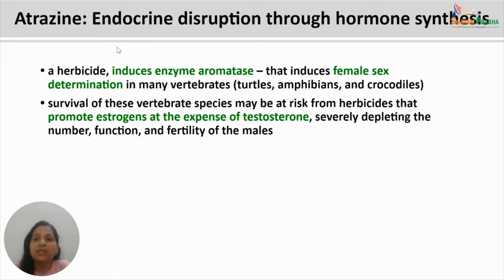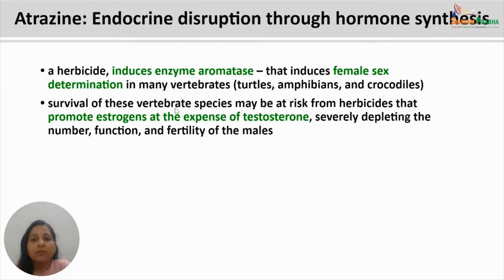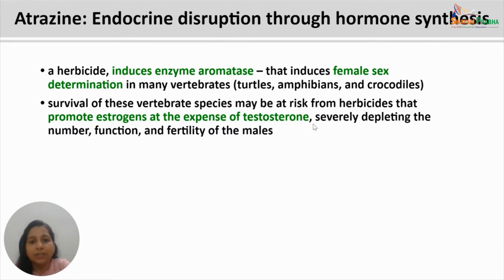The next endocrine disruptor is atrazine, a herbicide that acts through hormone synthesis. Atrazine induces aromatase synthesis, which induces female sex determination in many vertebrates such as turtles, amphibians, and crocodiles. Survival of these vertebrate species may be at risk because these herbicides promote estrogens at the expense of testosterone, converting most males into females. This causes depletion in the number of males, and even remaining males show highly reduced fertility, posing a risk to the male population of vertebrates.